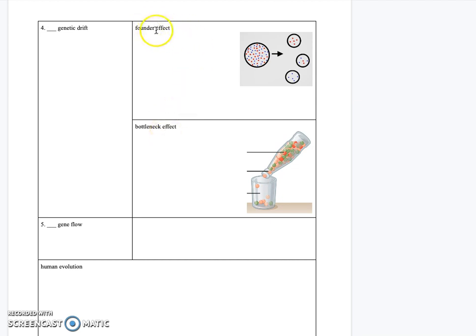In the founder effect, a small number of individuals are isolated from the main population by chance. Here you can see the general population's allele frequencies, and then three different small populations derived from it — each with different allele frequencies, but those differences are by chance, not due to any environmental pressure.